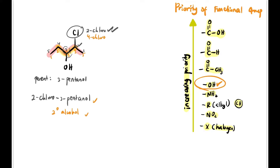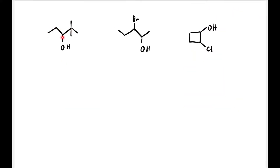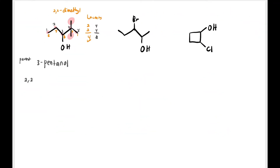For the next compound, OH wins again. Counting gives five carbons; OH is at carbon 3 from either direction, confirming 3-pentanol. For the substituents, using the orange numbering gives locants 2+2=4, while grey gives 4+4=8, so we prefer orange. Both methyl groups are at carbon 2, giving dimethyl: 2,2-dimethyl-3-pentanol. The OH carbon has two other carbons attached, making it a secondary alcohol.